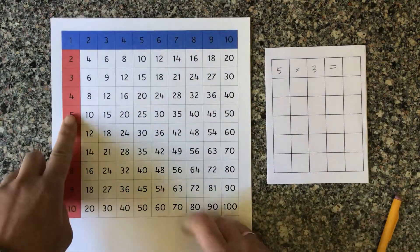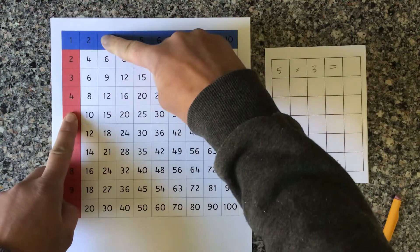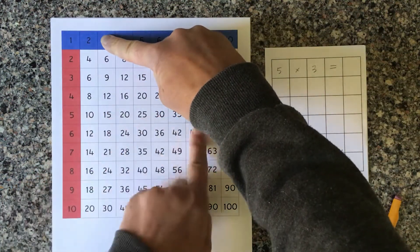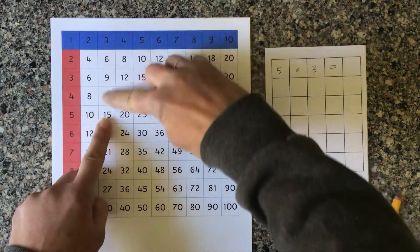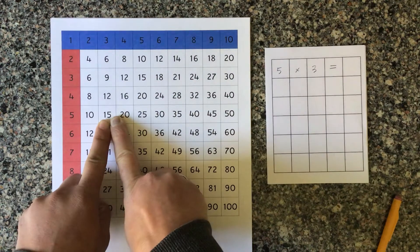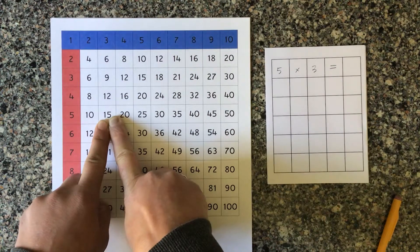So we're going to take 5, 3 times, and find this product. I'll find 5, I'll find 3. Same thing as with addition. This finger will move side to side and this will move up and down, and we're going to find the product. The answer of 5 times 3 is 15.